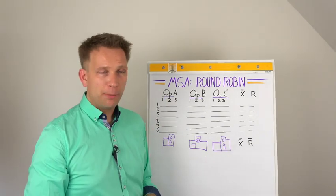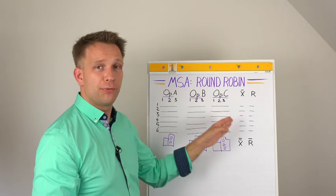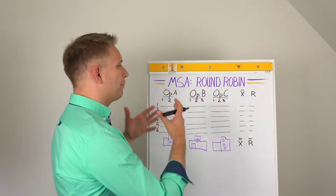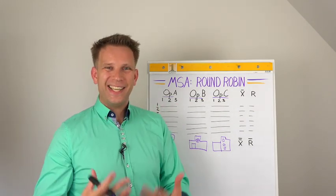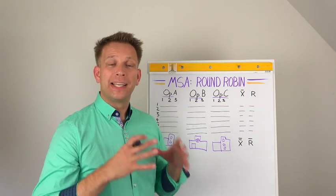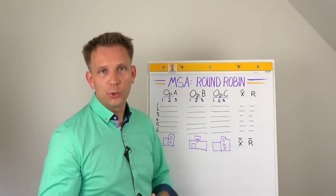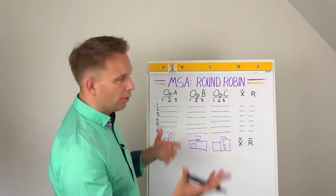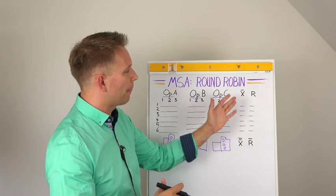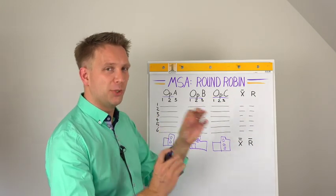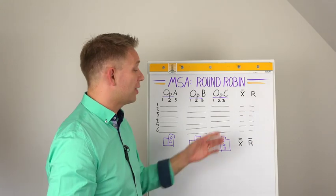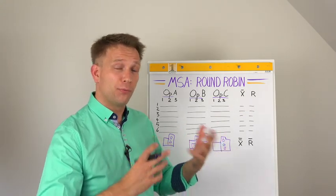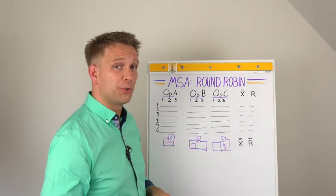So you get your six samples, everybody tries it three times with different codes, and then afterwards you do exactly the same mathematics that you would do with a usual gage R&R. So either the ANOVA or this mean and range type of way to guess the standard deviation and what percentage of repeatability and what percentage of reproducibility you have.